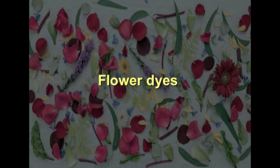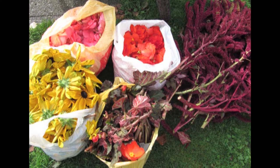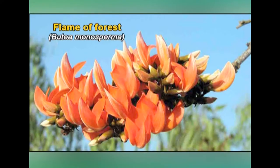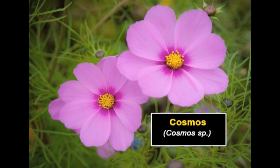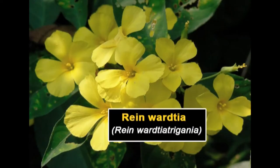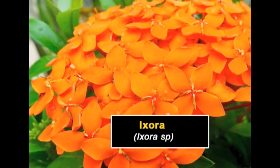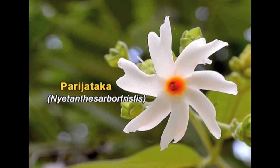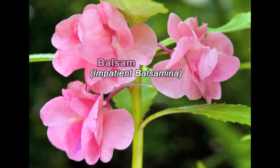Natural pigments from flower sources generally contain anthocyanins, flavones, and few carotenoids. The colors produced include reds, oranges, yellow, and white ochre shades. Examples include flame of forest, fire flame bush, red silk cotton, marigold, cosmos, acacia, saffron, safflower, ixora, gulmohar, parijataka, dahlia, goldenrod, balsam, and others.